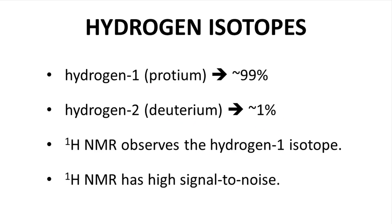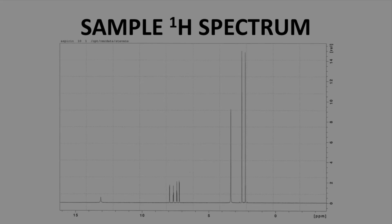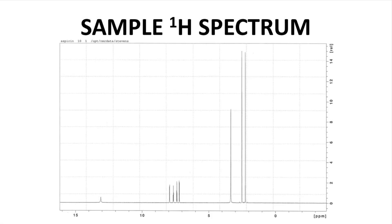In practice, this means you can acquire a spectrum quickly, and the baseline of the spectrum tends to be nice and flat. Here is a sample proton NMR spectrum — this is aspirin. The baseline is nice and smooth. Most proton spectra look like this because of the high abundance of the hydrogen-1 isotope.